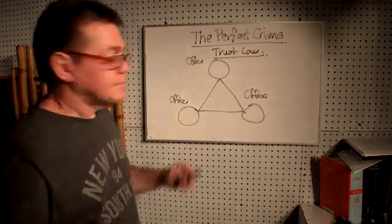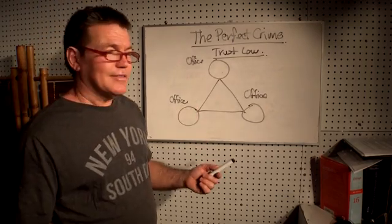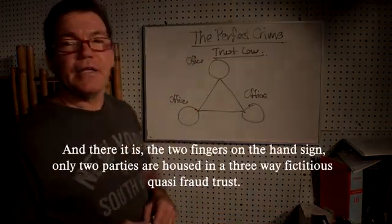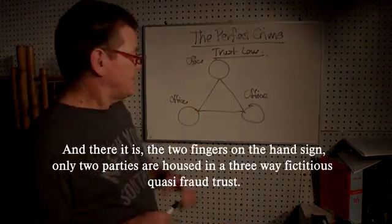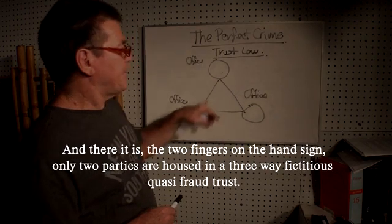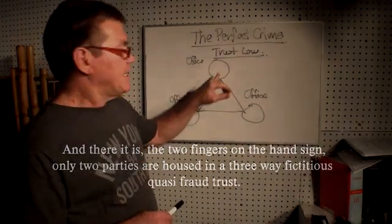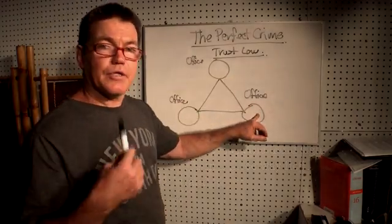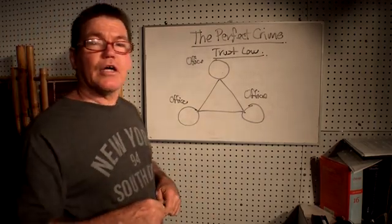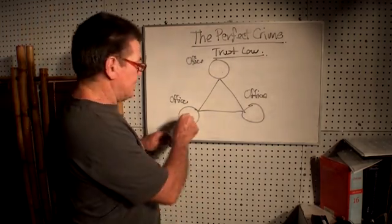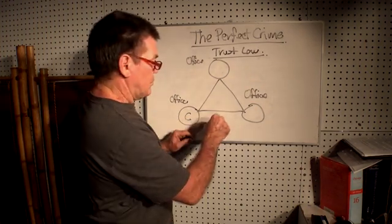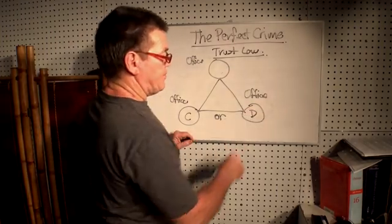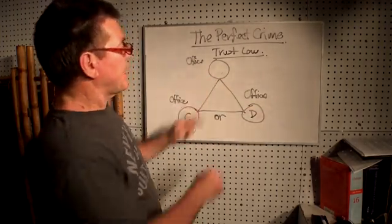These offices have to be filled. But in reality, there are only two parties: there is us, and there is the administrator. Between the creditor, the administrator, and the debtor — between us — you and I have only got a choice of being either the creditor or the debtor.